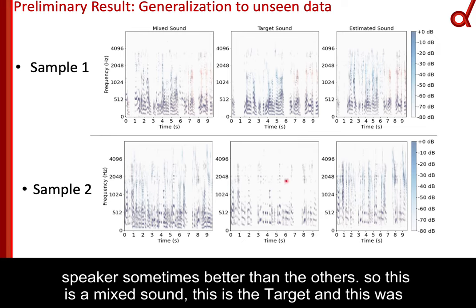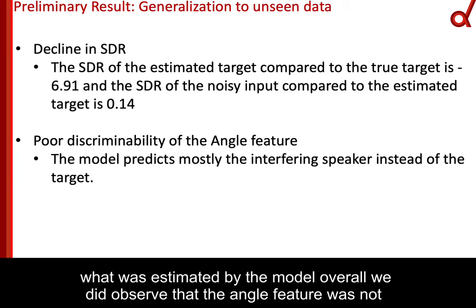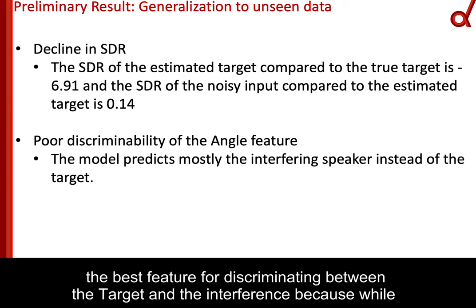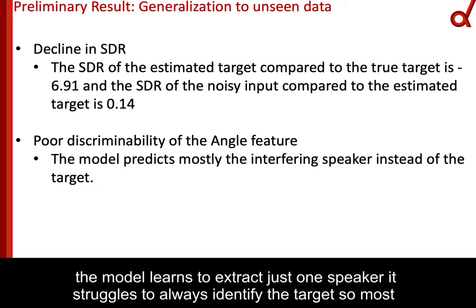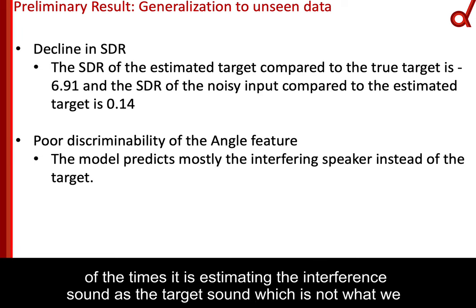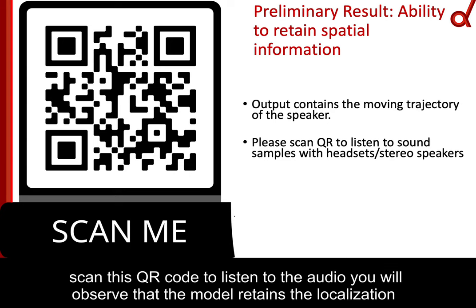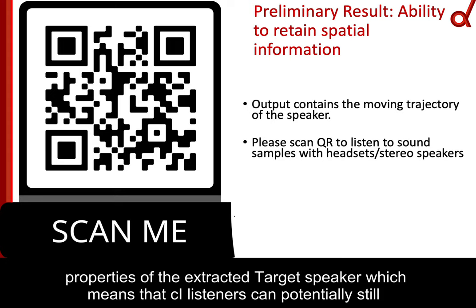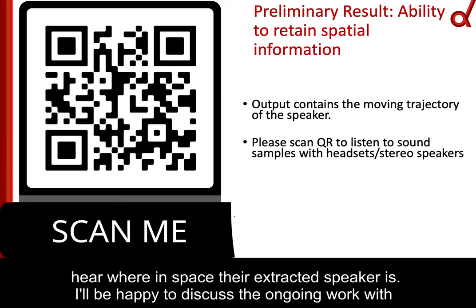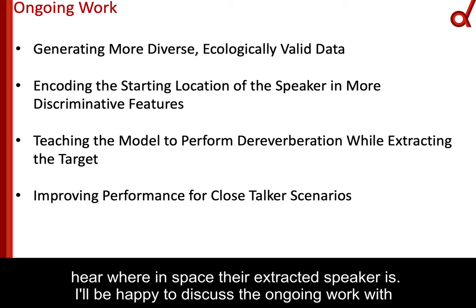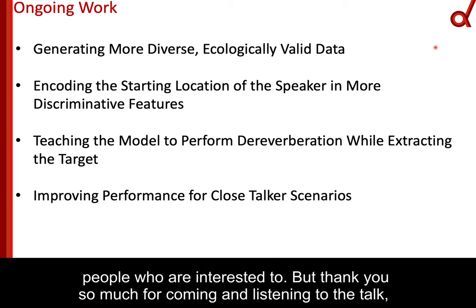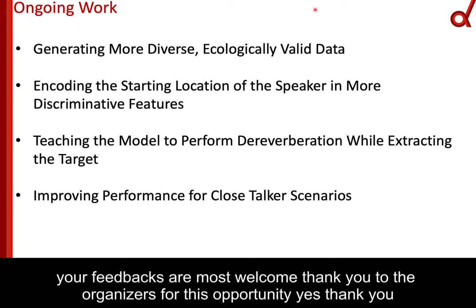This is the mixed sound, this is the target, and this is what was estimated by the model. Overall, we observed that the angle feature was not the best feature for discriminating between the target and the interference — the model sometimes estimated the interference sound as the target. However, the model was able to retain the spatial properties. If you scan this QR code to listen to the audio, you'll observe that the model retains the localization properties of the extracted target speaker, which means CI listeners can potentially still hear where in space their extracted speaker is. I'll be happy to discuss the ongoing work with interested people. Thank you so much, and your feedback is most welcome.